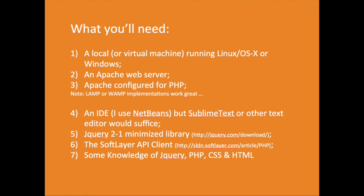You probably also want an IDE — Sublime Text or some other text editor would probably suffice. Download the jQuery 2.1 minimised library and go get the SoftLayer API client for PHP; I've given the addresses there so you can see them on screen. You'll also want to dust off your knowledge of jQuery, PHP, CSS, and HTML because what we're going to do is actually build something useful.